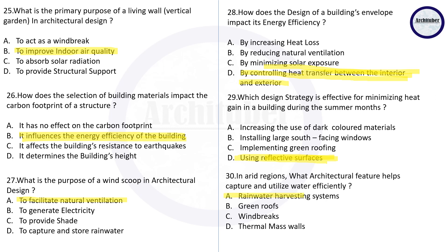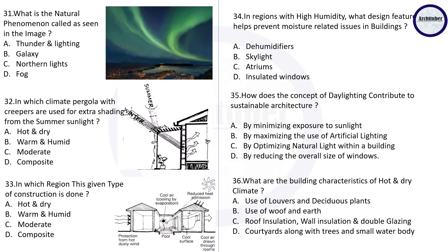Question thirty: in arid regions, what architectural feature helps capture and utilize water efficiently? The correct answer is rainwater harvesting systems. Question thirty-one: what is the natural phenomenon shown in the image? It is known as the northern lights or auroras. Question thirty-two: in which climate are pergolas with creepers used for extra shading from summer sunlight — hot and dry, warm and humid, moderate, or composite? The answer is composite climate.